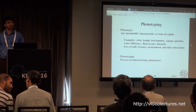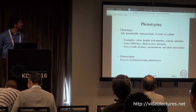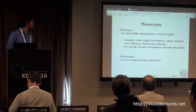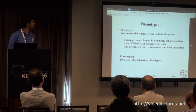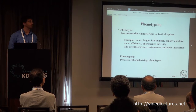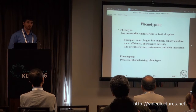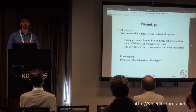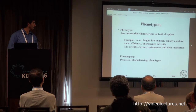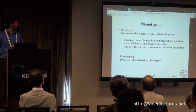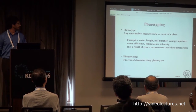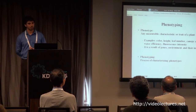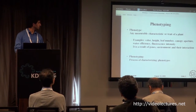First, I usually start defining the word phenotyping. Phenotype is any measurable characteristic or trait of a plant. Examples of features that we can observe from visible light include color, height, leaf number, and canopy aperture. There exist specific devices to measure fluorescence intensity, which is a result of photosynthesis. The big question in this field is how a phenotype is related with the genes of a plant, which are a result of the environment and their interaction. So phenotyping is just the process of characterizing phenotypes.